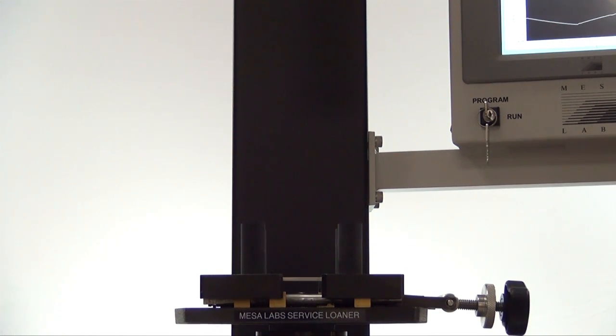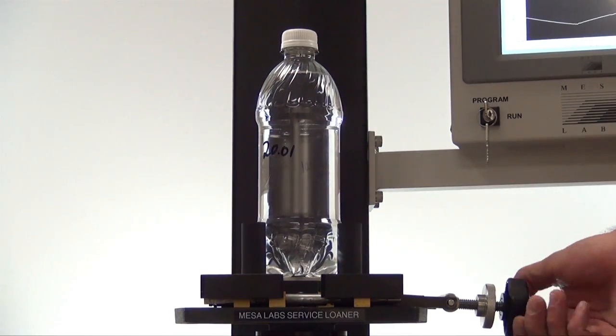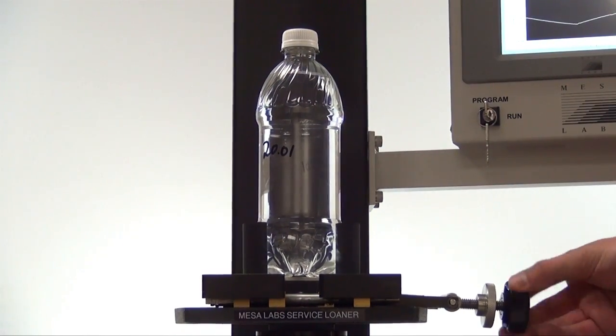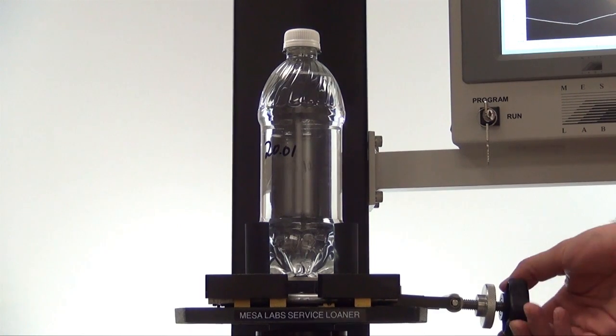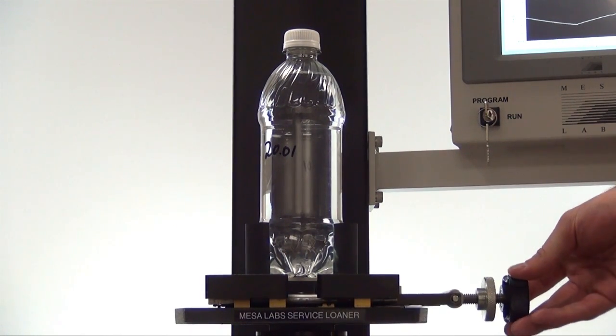Once you are at the main testing screen, you are now ready to place the product that you are going to test into the bottle holding fixture. Take the bottle, place it into the vise, tighten the vise by turning the lever clockwise. Once you have a firm grip on the product, you can now easily put bottles in and out by opening the lever.